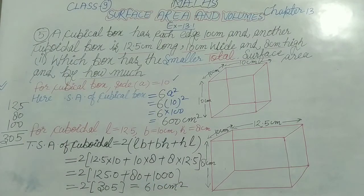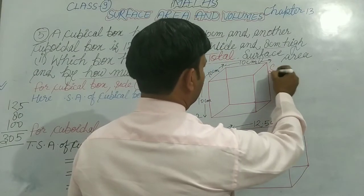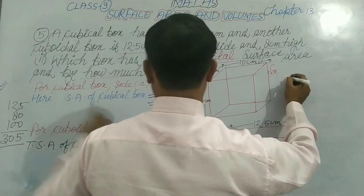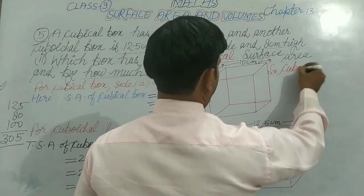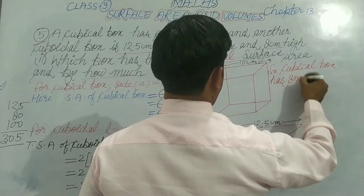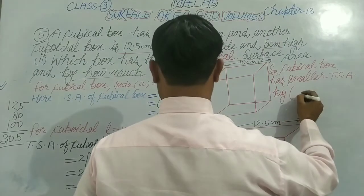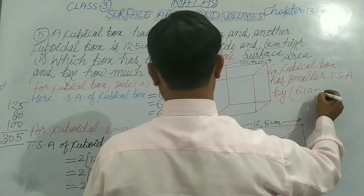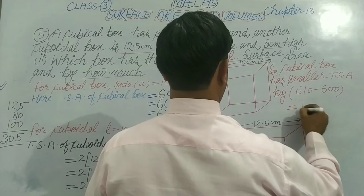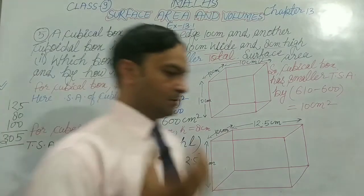Now we need to say which has smaller TSA. Cubical box has smaller TSA. And by how much? 610 minus 600 = 10 cm square. So cubical box has smaller TSA by 10 cm square. This is the second part of the question.